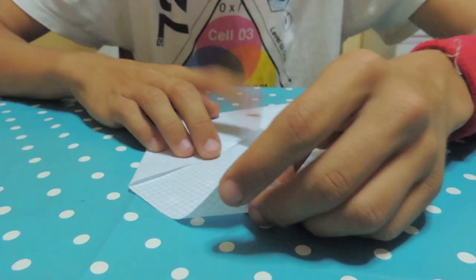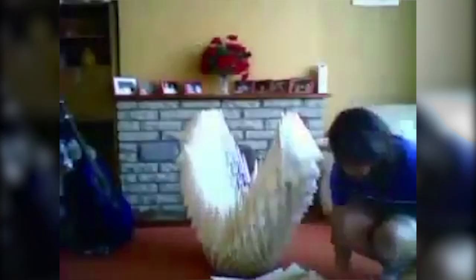Origami is not additive or subtractive. It's simply transformative, with a material already present. But this paper folding or manipulation of materials belies the imagination of the artist and engineer within.